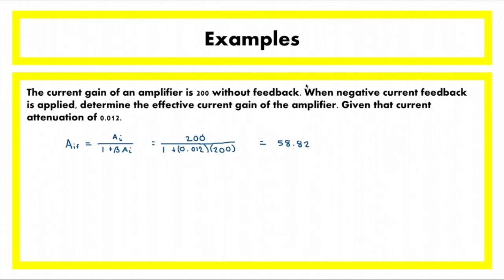Similar to negative voltage feedback, the value of the feedback gain is smaller than the open loop gain, and that is one of the effects of negative feedback. It stabilizes the gain of the amplifier, whether current gain or voltage gain, and by stabilizing the gain of the system, it increases the bandwidth.